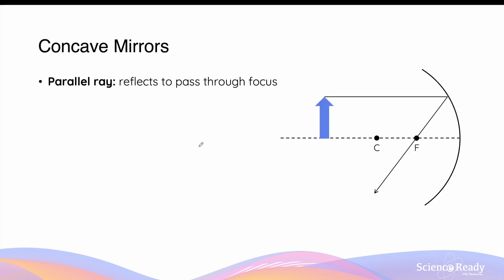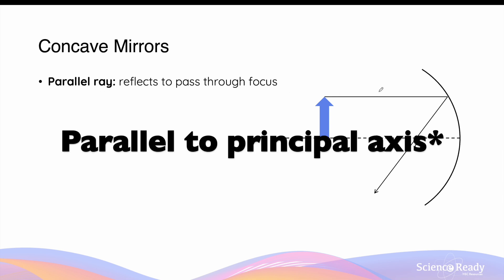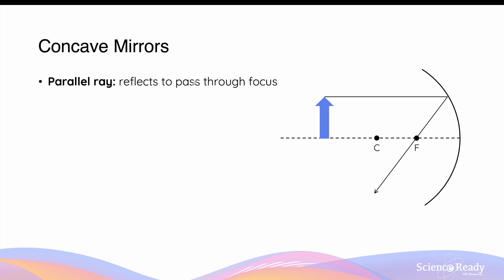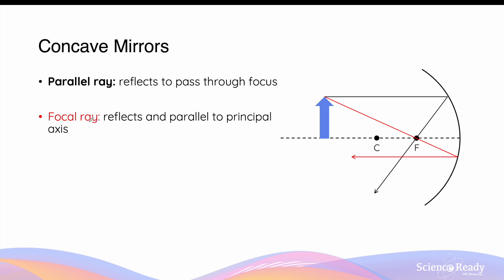There are a few rules that we need to understand when drawing optics. The first rule is that a parallel light ray that goes towards the mirror will be reflected in such a way so that it will pass through the focus of that mirror. The second rule is that a focal ray, which is a light ray that passes the focus of the mirror before reaching the mirror, will be reflected in such a way so that it is parallel to the principal axis. In this diagram, the dashed line represents the principal axis, which is horizontal. So you can see that the red ray passes through the focus and then reflects off the concave mirror so that it becomes horizontal as well, parallel to the principal axis.